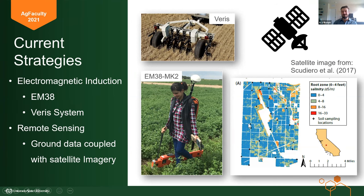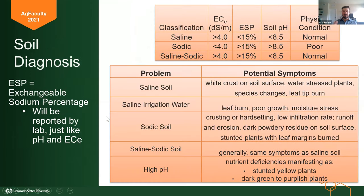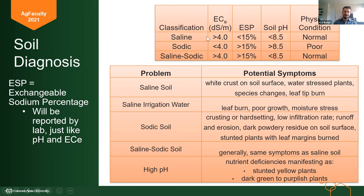Along with measurement, there are some classifications. Salts are not just plain salts — there are classifications: saline, sodic, and saline-sodic. Saline means it's a salty soil not necessarily because of sodium chloride (table salt), but other types like magnesium chloride or calcium chloride. Sodic soil is salty because of sodium chloride. Saline-sodic means you have a lot of both — really the worst possible situation. These are important for identifying potential symptoms and knowing what kind of remediation is needed.